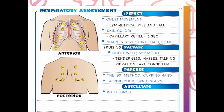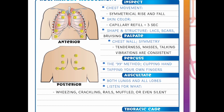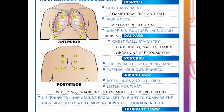During auscultation — listening — we place our stethoscope at the numbered reference points and listen to the inhale and exhale at each site. We're listening on both lungs across all lobes, truly hoping to hear clear lung sounds. But if we don't, are we hearing any wheezing, crackling, rales, muffled sounds, or even silent breath sounds? We want to listen from left to right to compare that symmetry and can do this bilaterally while moving down the thoracic region.